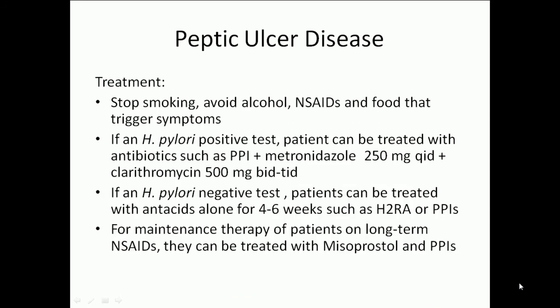Treatment includes stopping smoking, avoiding alcohol, NSAIDs, and foods that trigger symptoms. If H. pylori positive, the patient can be treated with antibiotics such as a PPI plus metronidazole 250 mg four times a day and clarithromycin 500 mg two to three times a day. If H. pylori negative, patients can be treated with antacids alone for four to six weeks such as H2 receptor antagonists or PPIs. For maintenance therapy in patients on long-term NSAIDs, misoprostol and PPIs can be used.